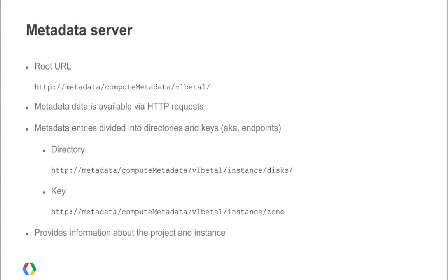All metadata is stored on the Compute Engine metadata server, which is only available from Compute Engine instances. The root URL of the metadata server is http://metadata/computeMetadata/v1beta1/. Metadata entries are available as subpaths under this root URL, and instances access them by making an HTTP request. Metadata entries are divided into directories and keys, also known as endpoints. Directories contain other metadata entries, while a key maps to a specific value. You can distinguish between the two by the trailing slash in the name, which indicates a directory.